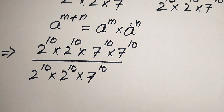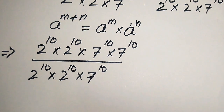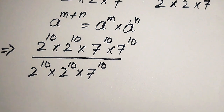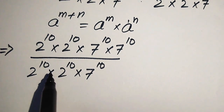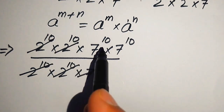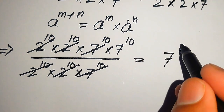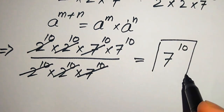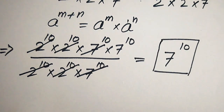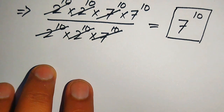Some students can do these calculations directly in their mind, but for average students I show every step. Now, 2^10 cancels with 2^10, the second 2^10 cancels with the other 2^10, and 7^10 in the numerator cancels with 7^10 in the denominator. The remaining value is 7^10, which is our final answer from Method 1.